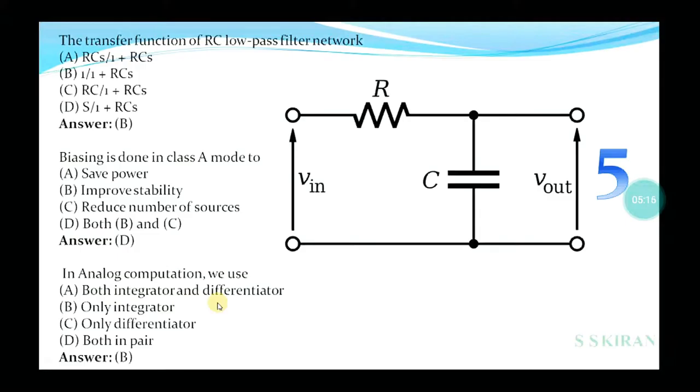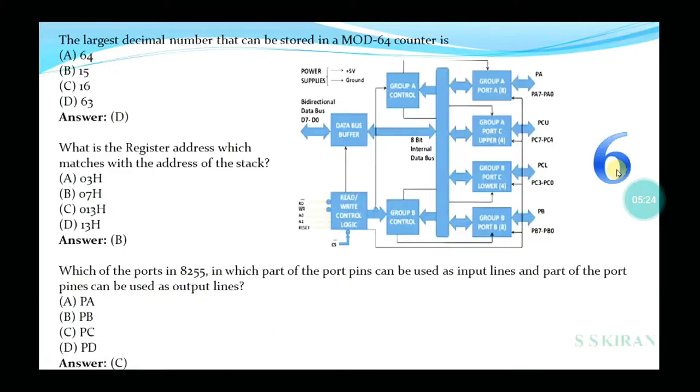Biasing is done in Class A mode for which purpose: save power, improve stability, reduce number of sources, or both B and C? The answer is D, both improve stability and reduce number of sources. In analog computation we use both integrator and differentiator, only integrator, only differentiator, or both in pair? Only integrator, option is B.